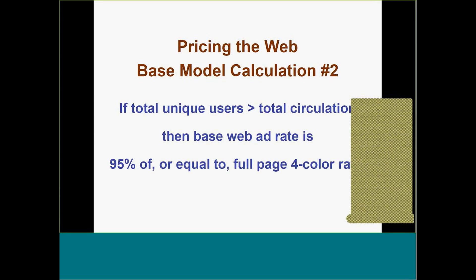Now let's talk about when your total unique users is actually greater than the circulation of your magazine. That happens a lot. If your total unique users is greater than your total circulation, you're going to price your web advertising at almost the same as a full-page ad in the magazine. If you have more people reading your website than your magazine, your web advertising needs to be at least as valuable — otherwise you're telling your advertiser that your online readers are less valuable than your print readers. That's just not true.